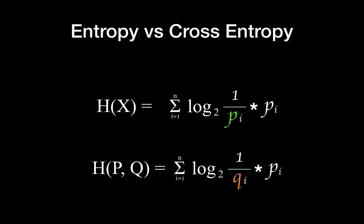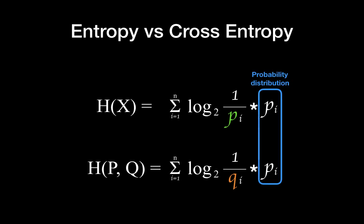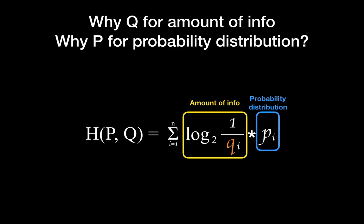As you can see from this comparison, cross-entropy is just like the entropy equation, but we have Q instead of P in the log value's denominator. If you remember from my previous entropy videos, here P_i is the probability distribution, and the log value is the amount of info. You should question why Q for the amount of information and why P for the probability distribution.